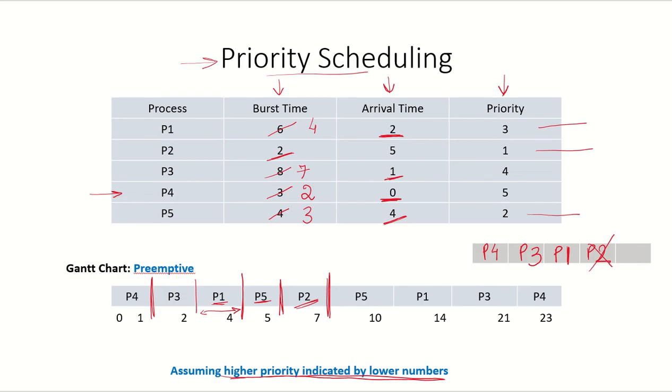After P2 finishes, the priority of the processes which are in the ready queue P4, P3, P1, and P5 will be compared. Since P5 has the next highest priority, P5 will get to run. Remaining time unit of P5 was 3, so it will run from 7 to 10 and P5 is also completed now.